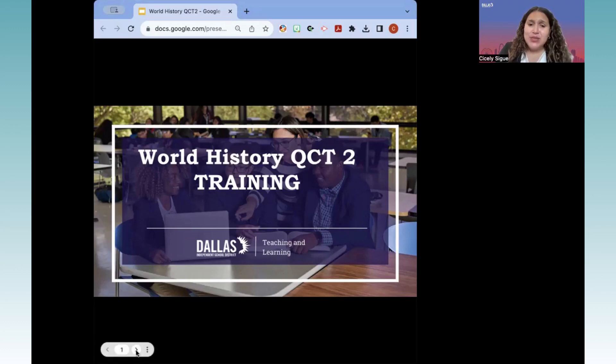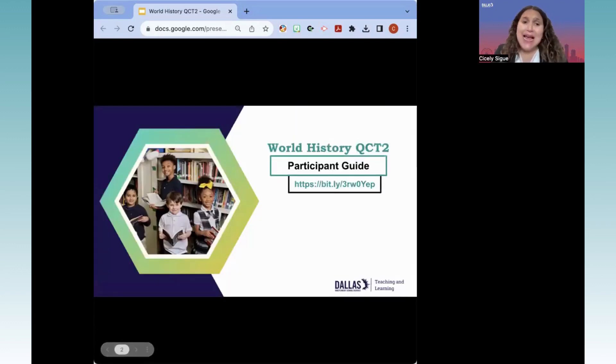Before we dive into our training for today, our quarter two content training for world history, I'd like for you to take a few seconds to access the participant guide by typing in this bit. During our time together today, we will focus on using 2022 fall ACP data to inform our instruction, as well as to ensure that we are spiraling content throughout the course of world history. And we will also take a sneak peek at some of the instructional implications.